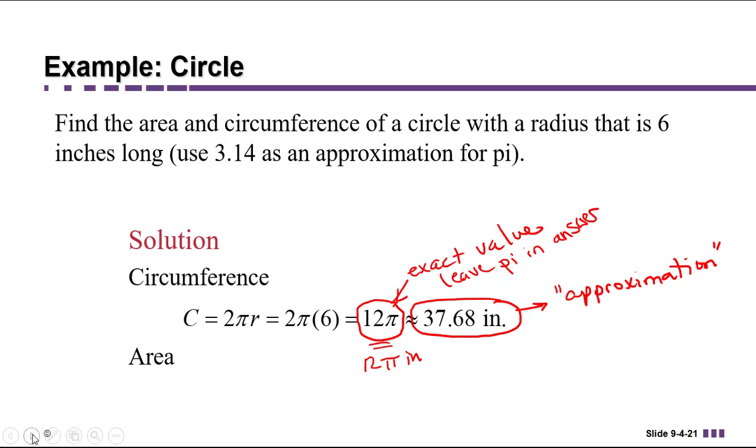All right, now let's find the area of the circle. Similarly, area equals pi R squared. So we're going to plug in 6 for R, pi times 6 squared is 36 pi.